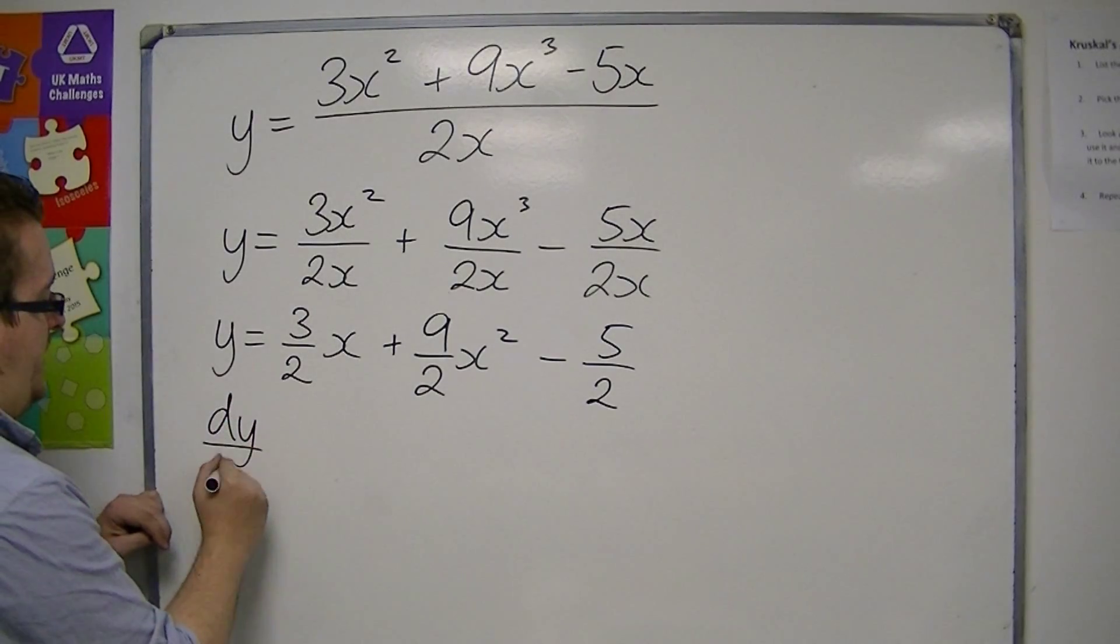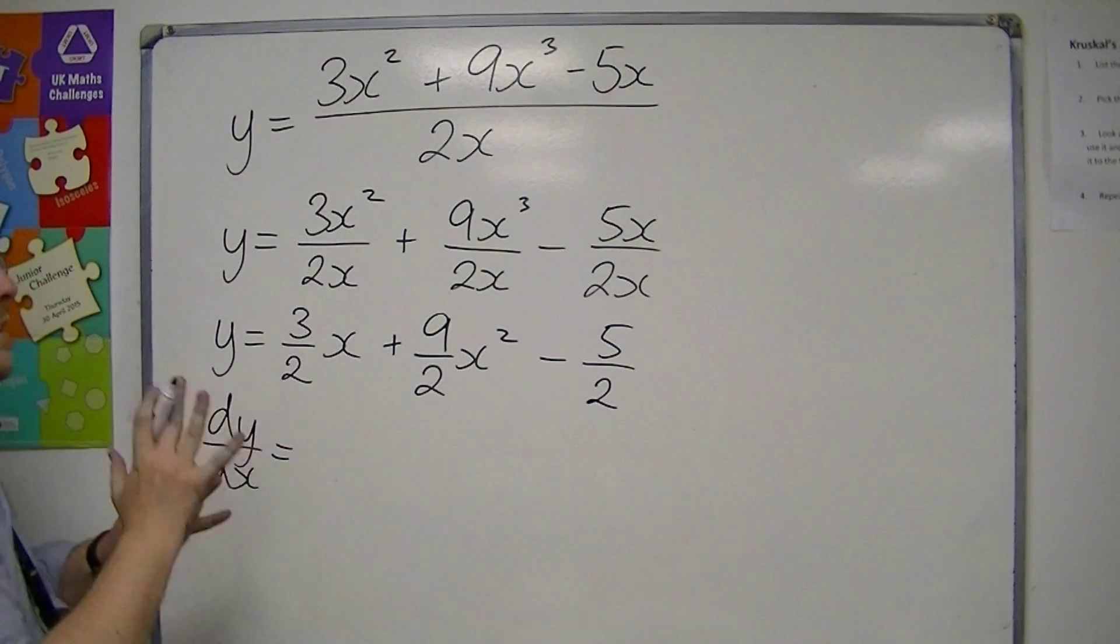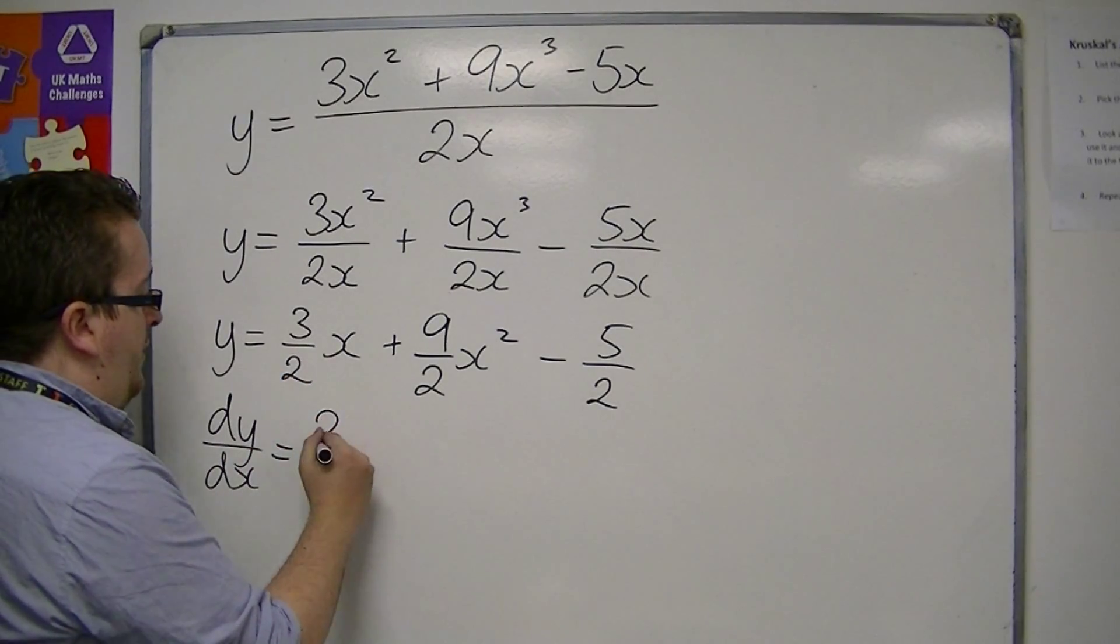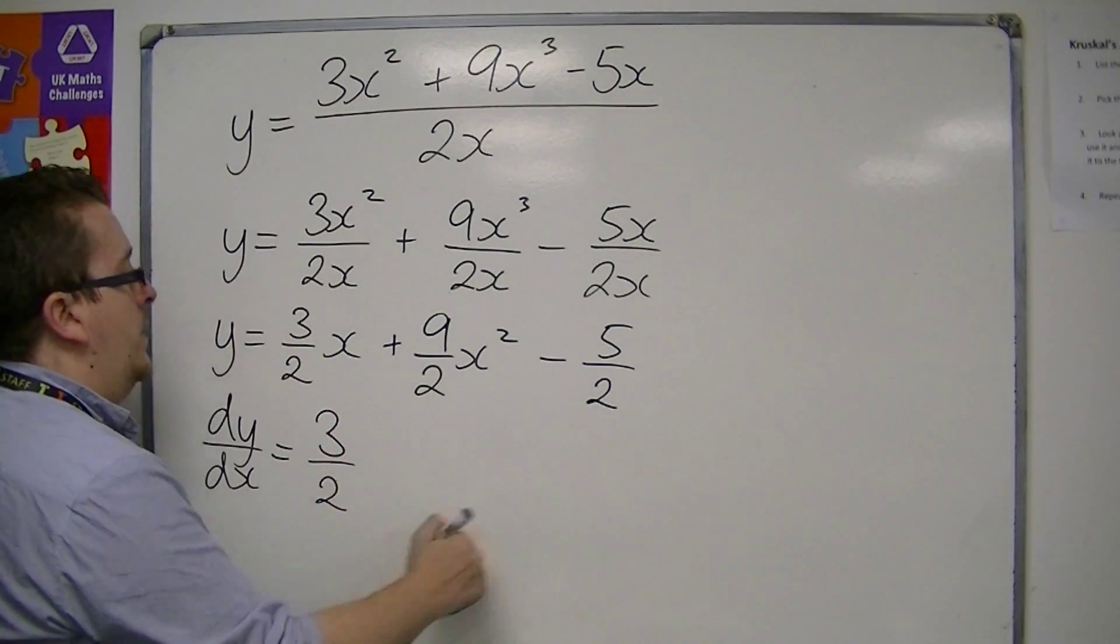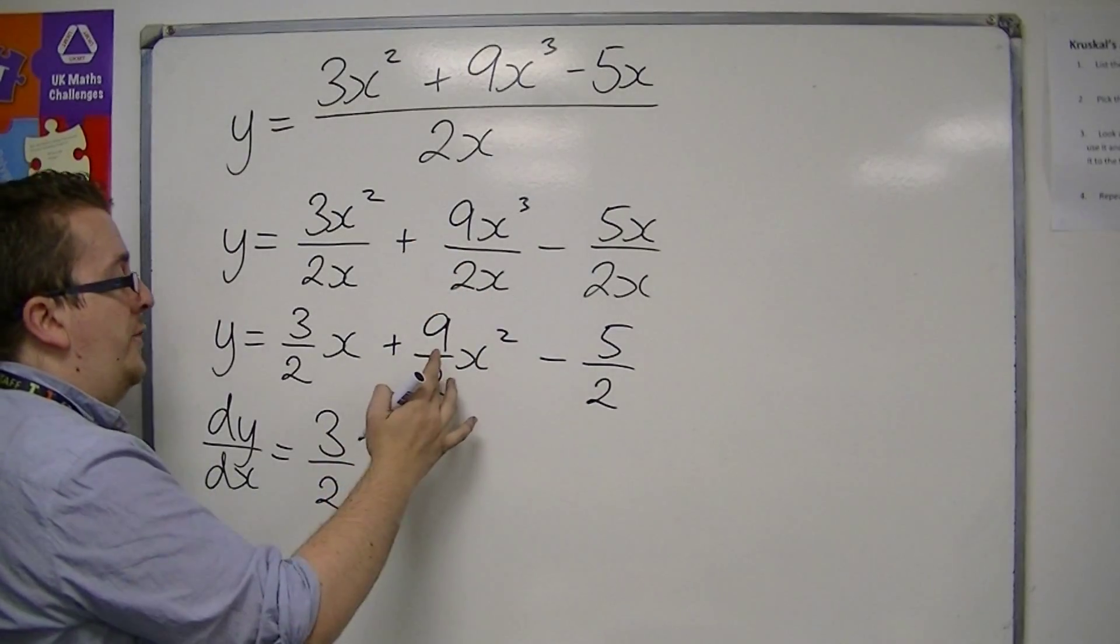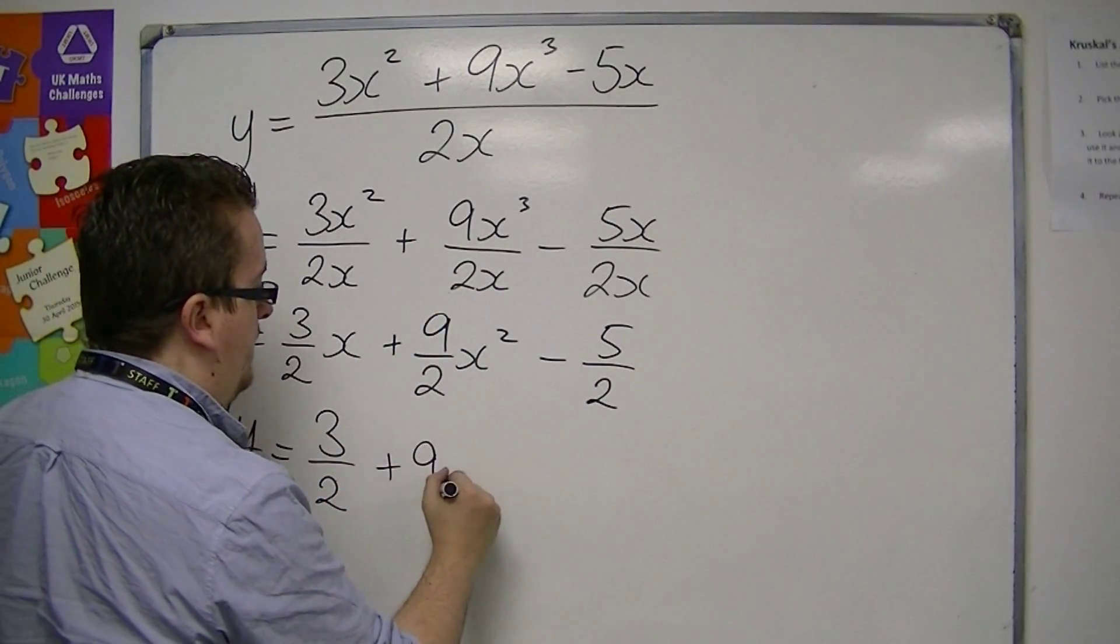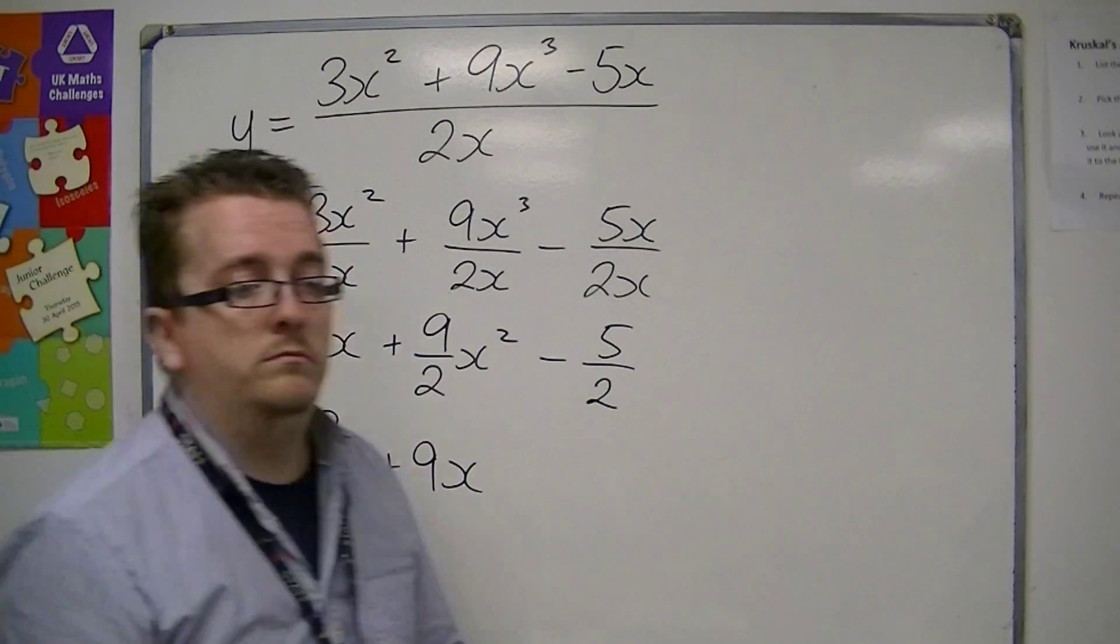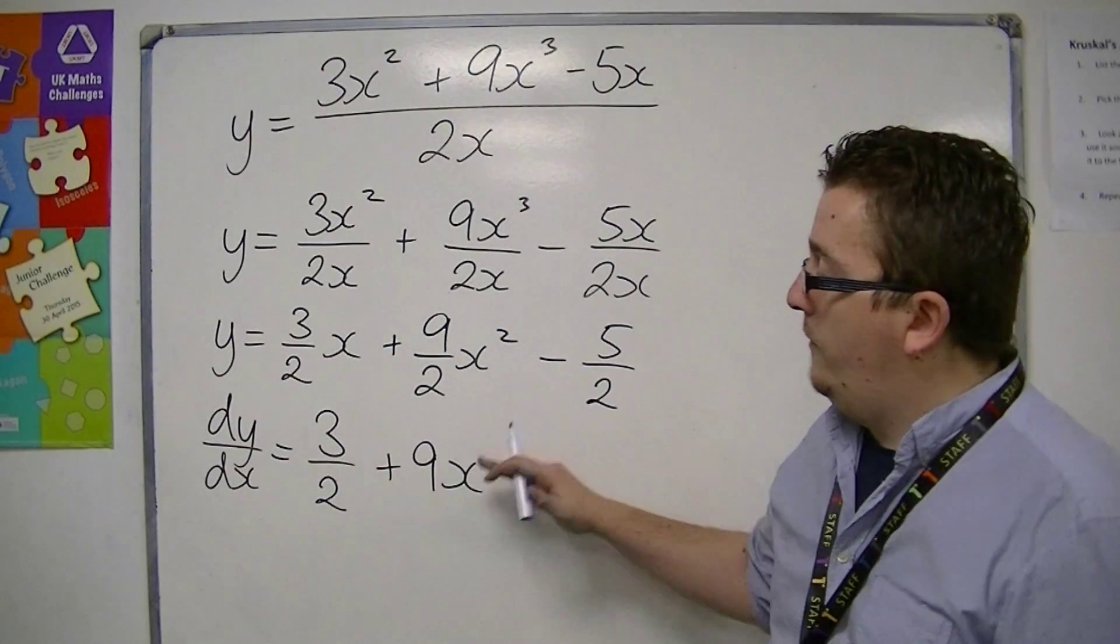Then, you are ready to differentiate. It is only then. So, we've got 3 halves x will differentiate to 3 halves. You've got 9 halves times the 2, so that's just 9x. And then, the minus 5 halves will differentiate to 0. And that is what you are left with. 3 halves plus 9x.